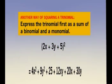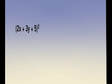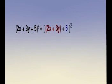We can also square a trinomial by expressing it first as the sum of a binomial and a monomial. 2x plus 3y plus 5 is equal to quantity 2x plus 3y plus 5. Squaring this...